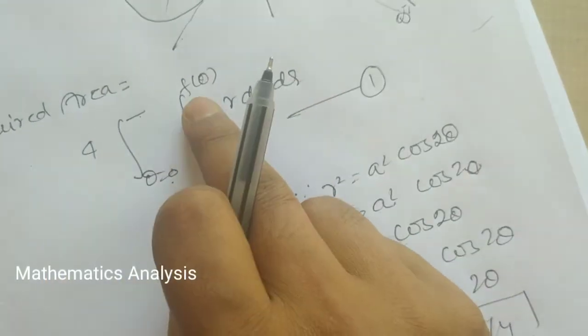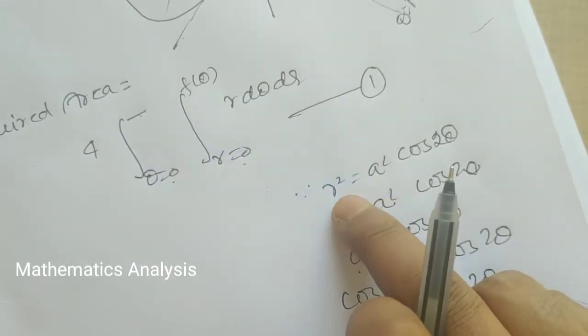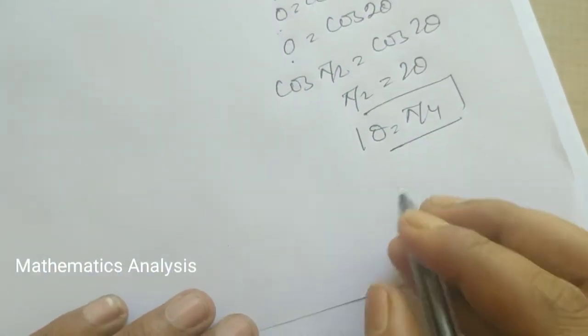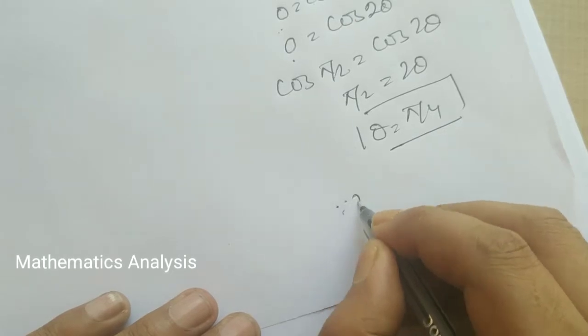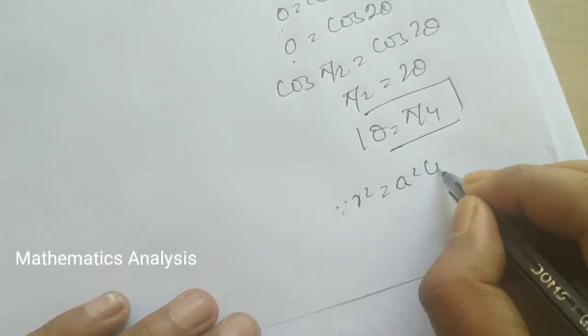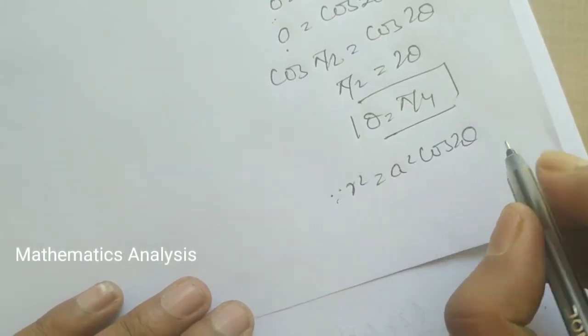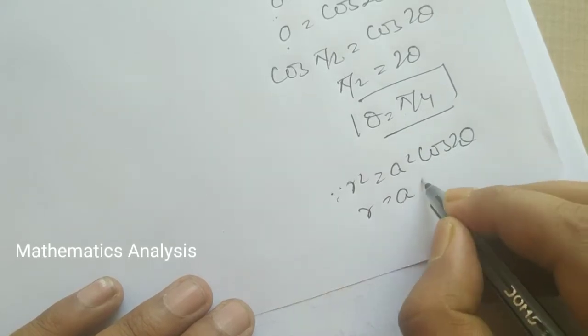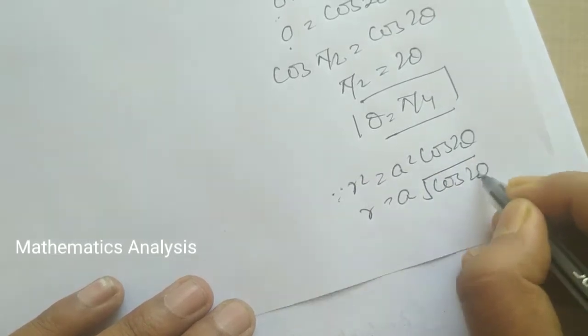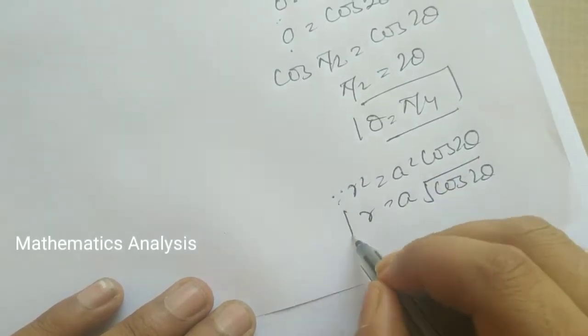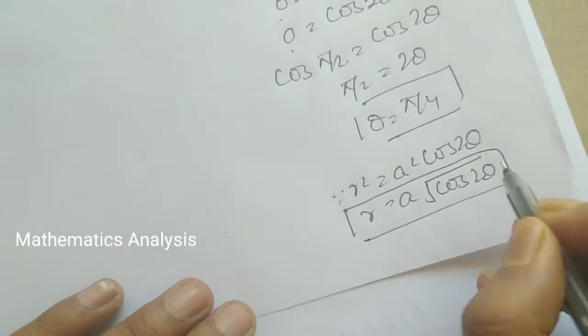We've already understood. The function of theta is the value of r. So what does r have? Since r squared is a squared cos 2θ, the r value is a times square root of cos 2θ.